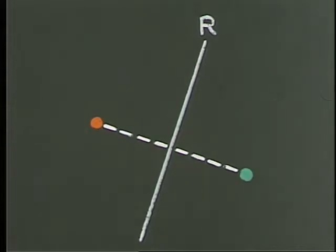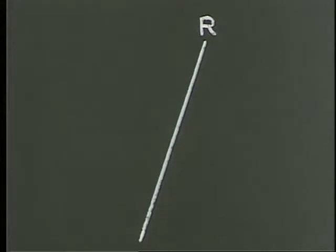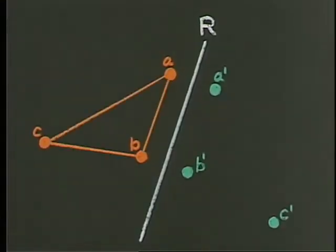There's an object. There's its image. This correspondence maps distinct points to distinct points and preserves distance. It's a mathematical reflection.